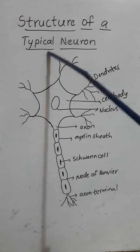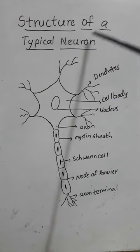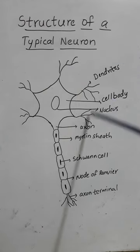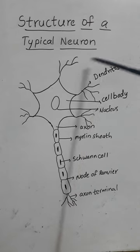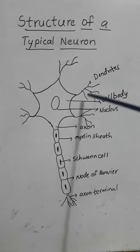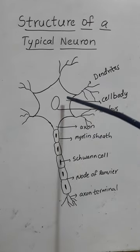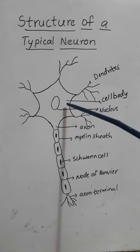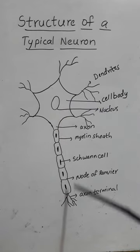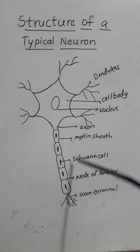Structure of a Typical Neuron. The structure of a typical neuron consists of the following parts. The main parts that exist in the neuron are the cell body and this is the axon part.